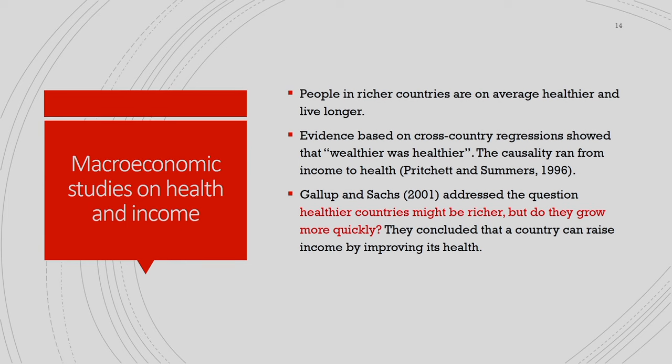Macroeconomic studies on health and income show that people in richer countries are on average healthier and live longer. Evidence based on cross-country regressions have shown that wealthier are healthier — the causality runs from income to health. Scholars have addressed the question: healthier countries might be richer, but do they grow more quickly? They concluded that a country can raise income by improving its health. The causality works both ways — while income may lead to better health outcomes by providing better access to healthcare services, better health also may lead to better income.